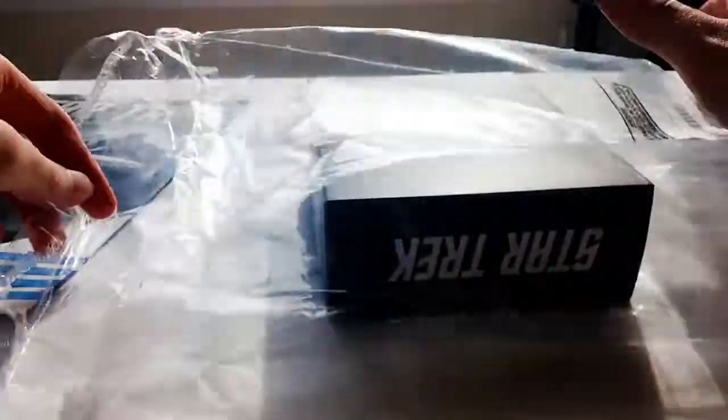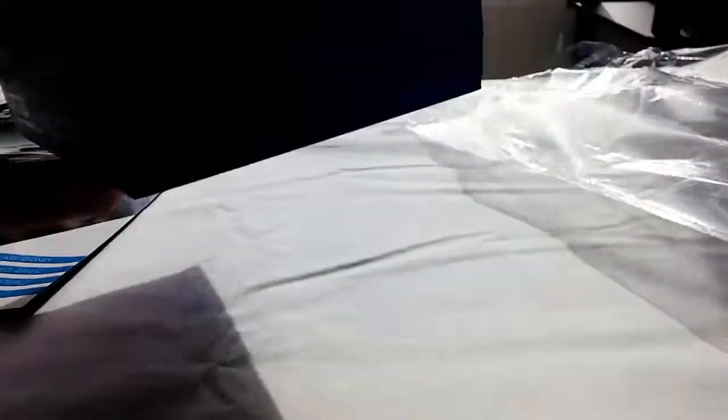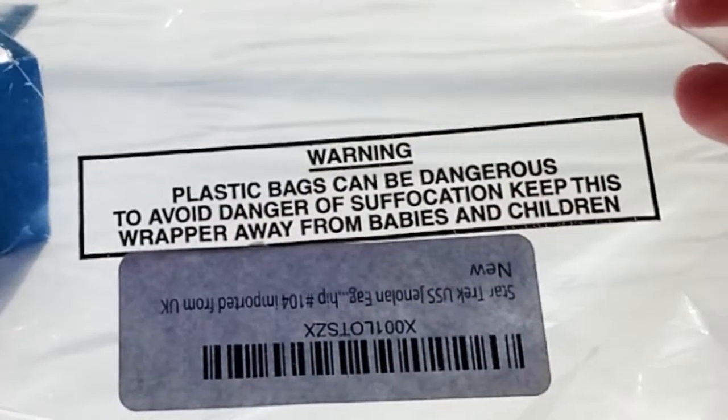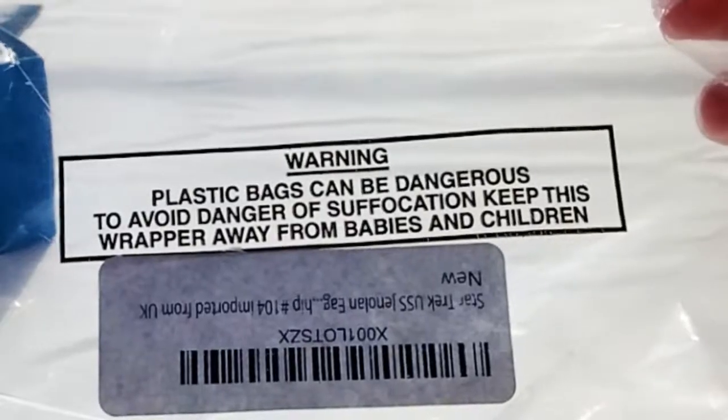Maybe I should have actually prepared for something like this more. So I guess the first part of any unboxing video is we actually have to open the box. Like that's part of the title. Okay, got that open there. So we got this book. That's cool. We'll set that up this side. And we got the actual toy right here. And then we have the best part of all, the bag. A plastic bag can be dangerous to avoid suffocation. Keep this wrapper away from babies and children.